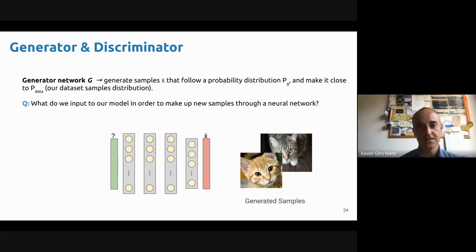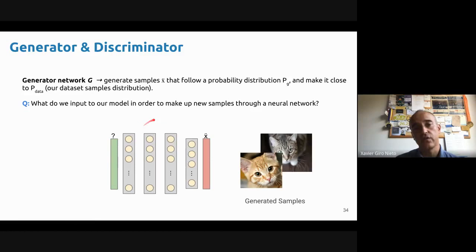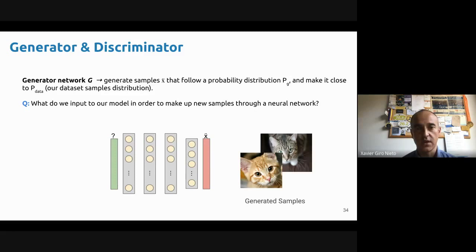We would like some stochasticity here. We don't want the network to always predict the same cat, because that's going to be very useless. How could we introduce some stochasticity into the network? Remember a network is in the end just a set of weights and biases connected with neurons. What you've seen in the course is that when you feed some input sample into a network once and again and again, the output is always the same. When you train your network with MNIST and show a digit number 2, you'll get number 2 every time with exactly the same probability.